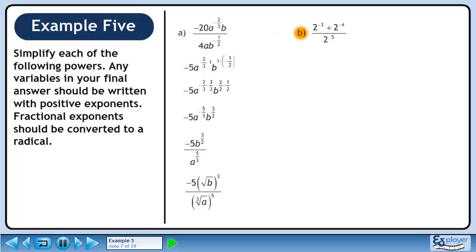Now we'll move on to part b. Write each power so it has a positive exponent. 2 cubed is 8, 2 to the power of 4 is 16, and 2 to the power of 5 is 32.